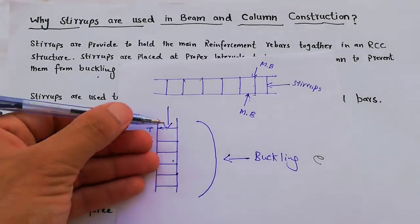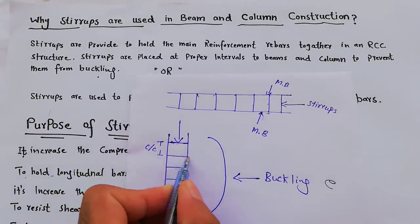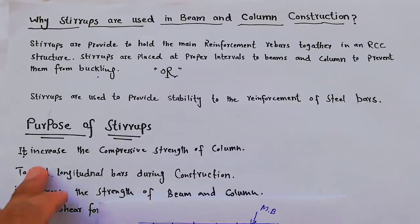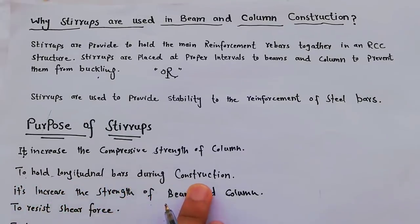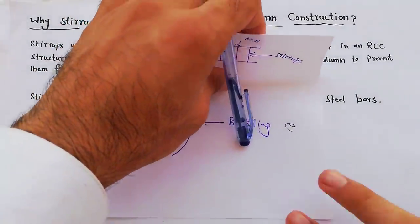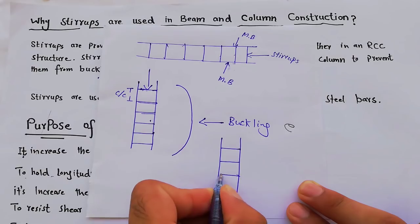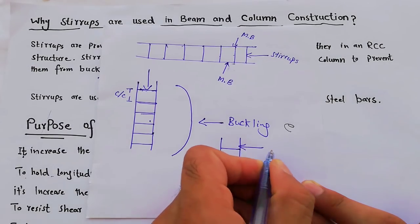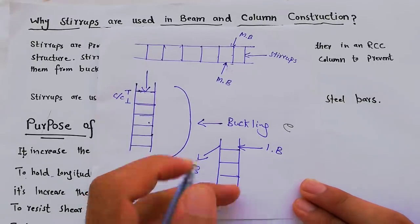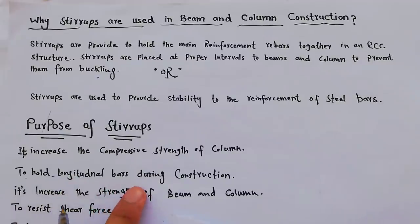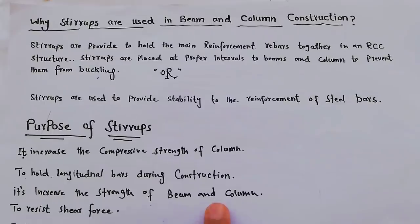When we provide stirrups, it increases the compressive strength of the column and holds the longitudinal bars during construction. These are called longitudinal bars in the column. Stirrups hold the longitudinal bars, and they also increase the overall strength of beam and column.